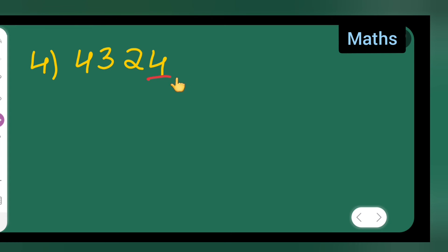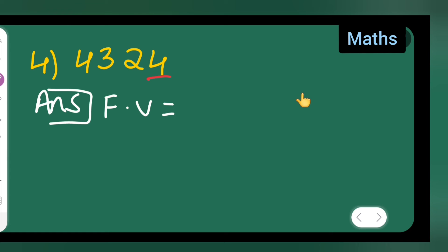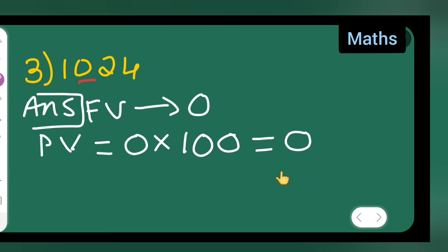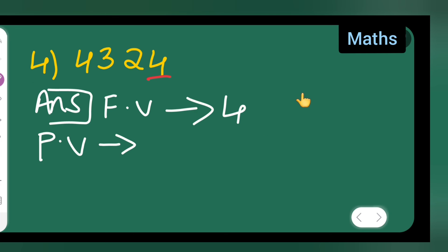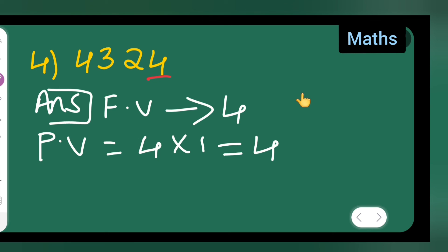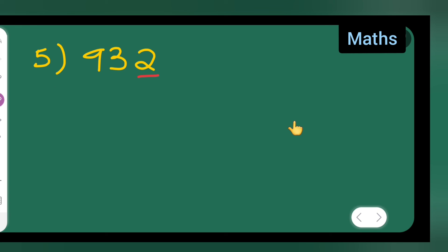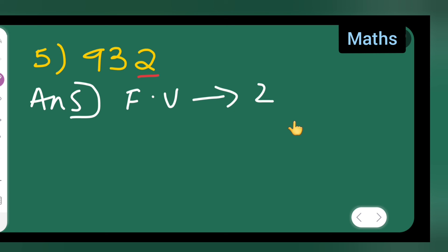Next, the fourth one. The face value will be 4 and the place value will be 4 multiplied by 1, which gives you 4 — four ones are 4. For the fifth one, the face value will be 2 and the place value will be 2 multiplied by 1, which gives you 2.